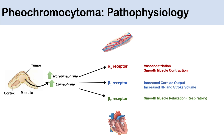Beta-2 receptor activation is involved in smooth muscle relaxation in the respiratory system. This is by no means a complete list of adrenergic receptors and their downstream effects, but more will be covered in a future lesson.